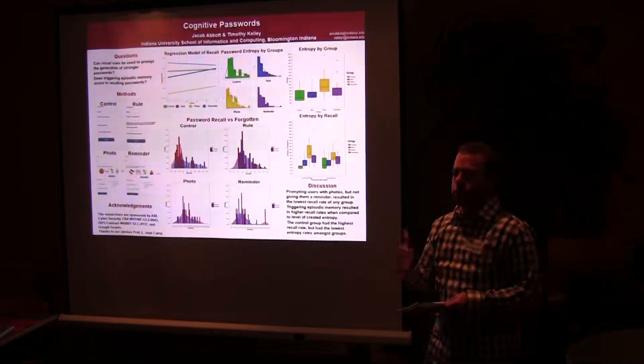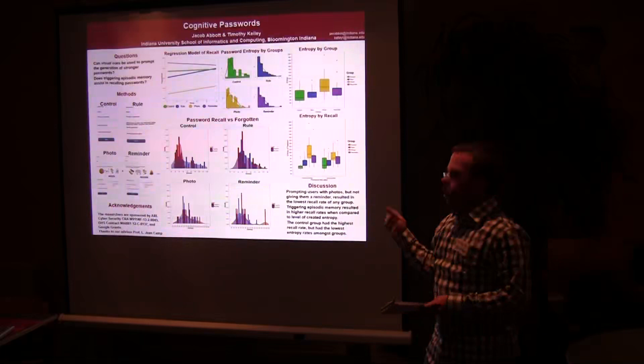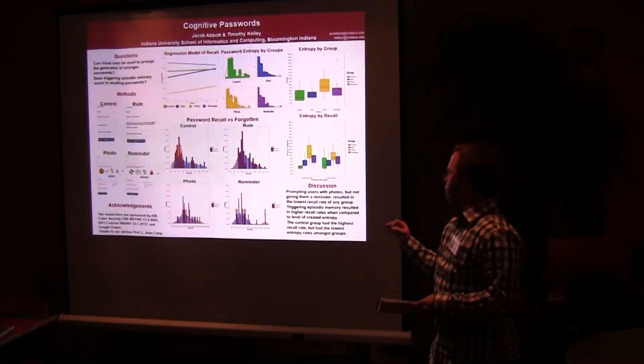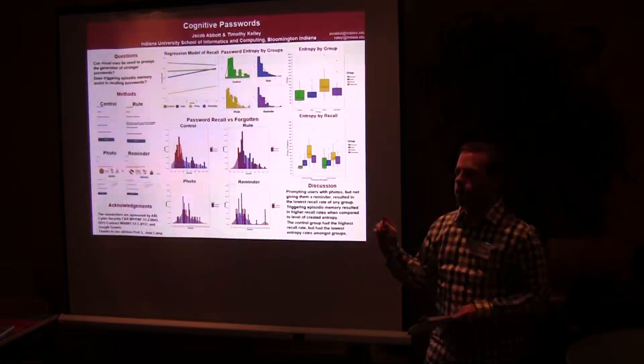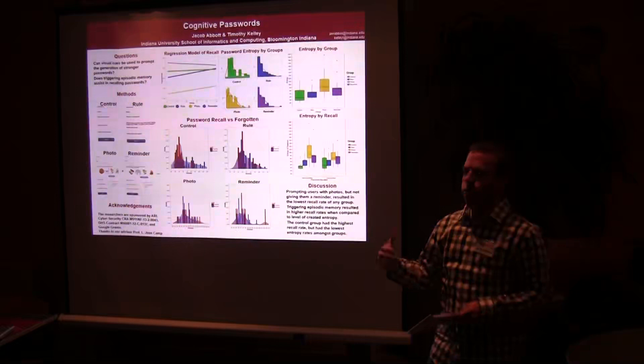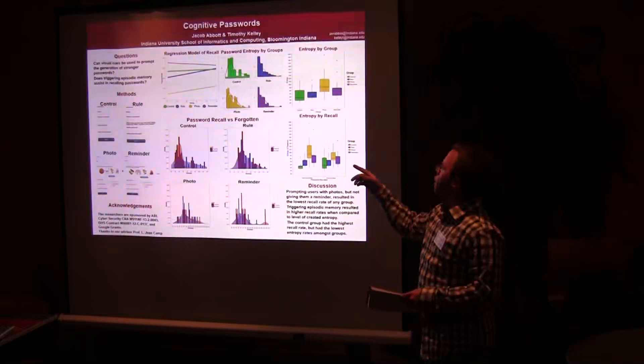The control group actually had successful recall about 77% of the time. The rule group was 70%. The photo group, which had the highest entropy values, actually had the lowest successful recall rate at about 47%, which was the worst of any of the groups. The reminder group, however, actually had a 74% recall rate, which is less than the control group. But when you compare the entropy values of the passwords between the control and the reminder group, the reminder group is significantly higher.